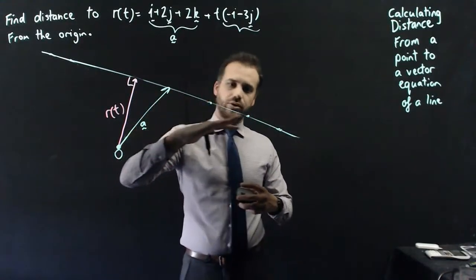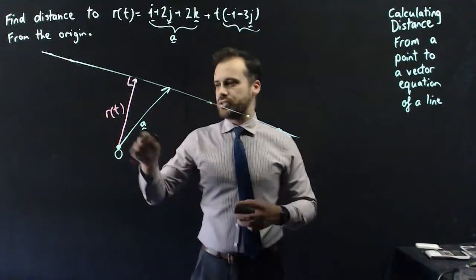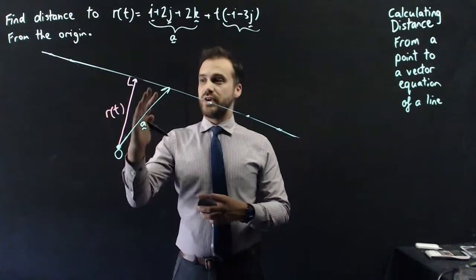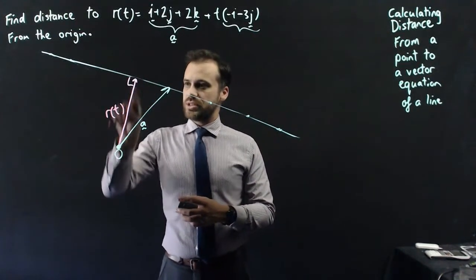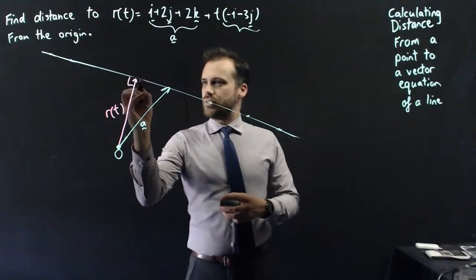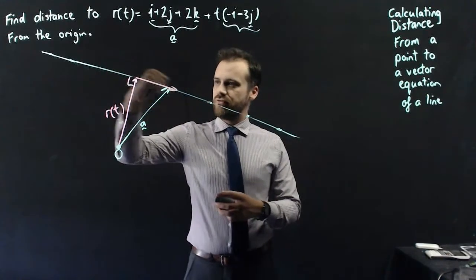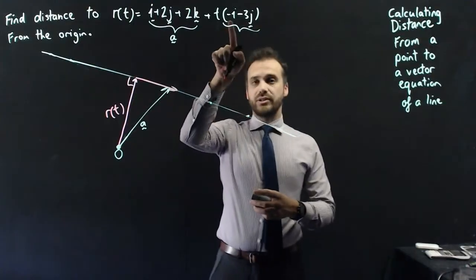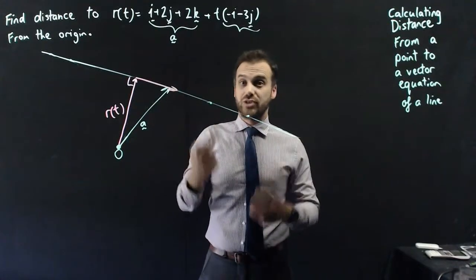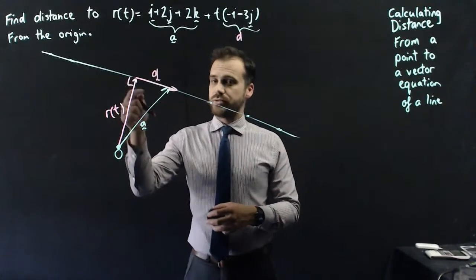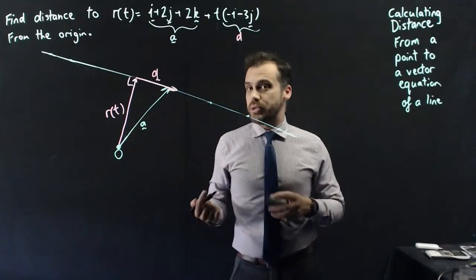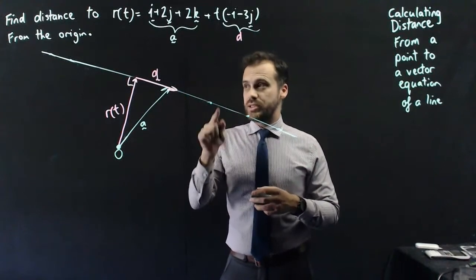Talking about what we discussed before, with a vector equation being an infinite number of vectors, this vector here is r with respect to t — it is one of those vectors. If we just knew what t value makes it a right angle, we'd be in business. This vector in this direction is parallel to negative i minus 3j, because that's the direction the vector equation is traveling in. So now I have two vectors: r(t) and d. Because I want them to be perpendicular, their dot product needs to equal zero.